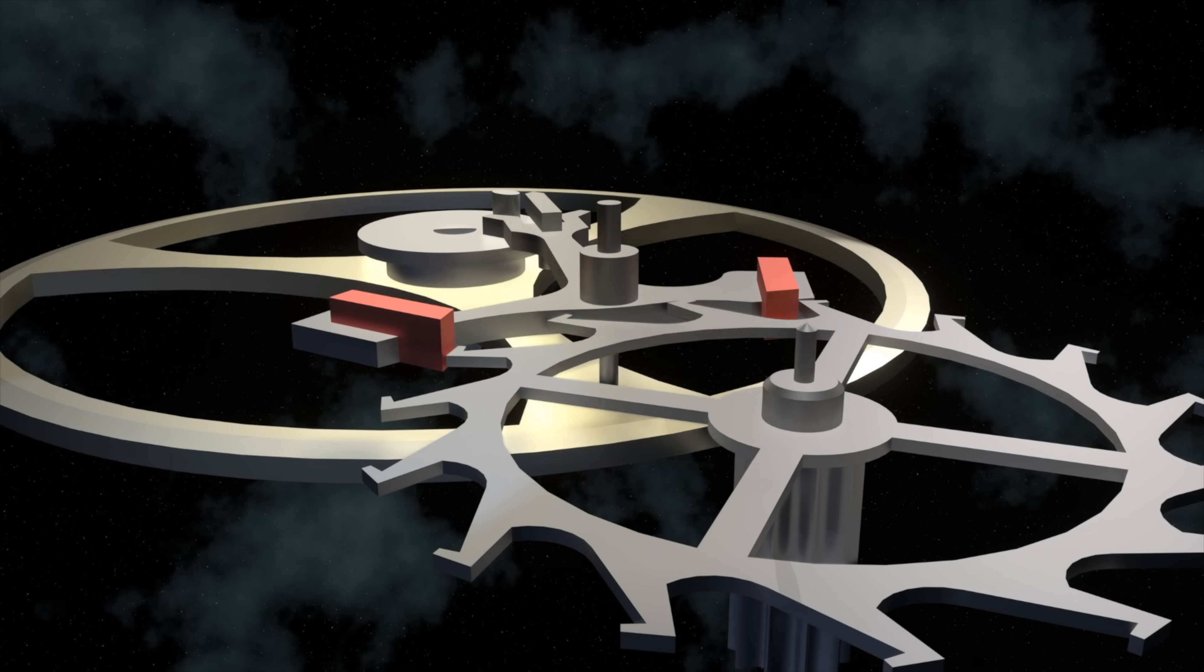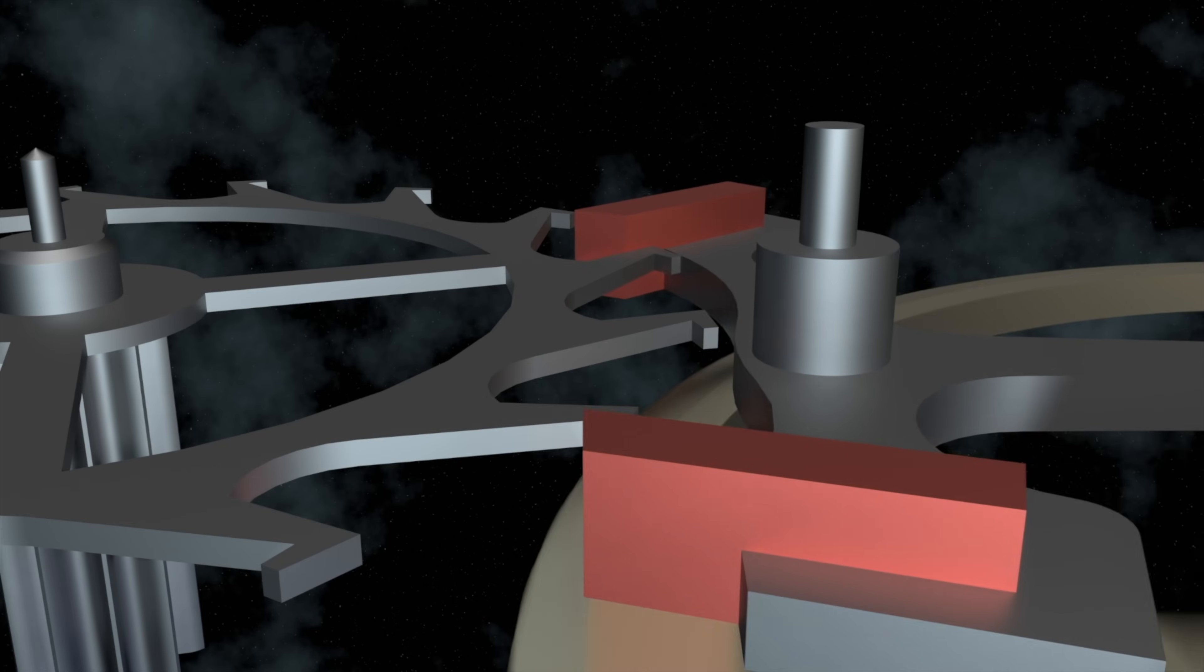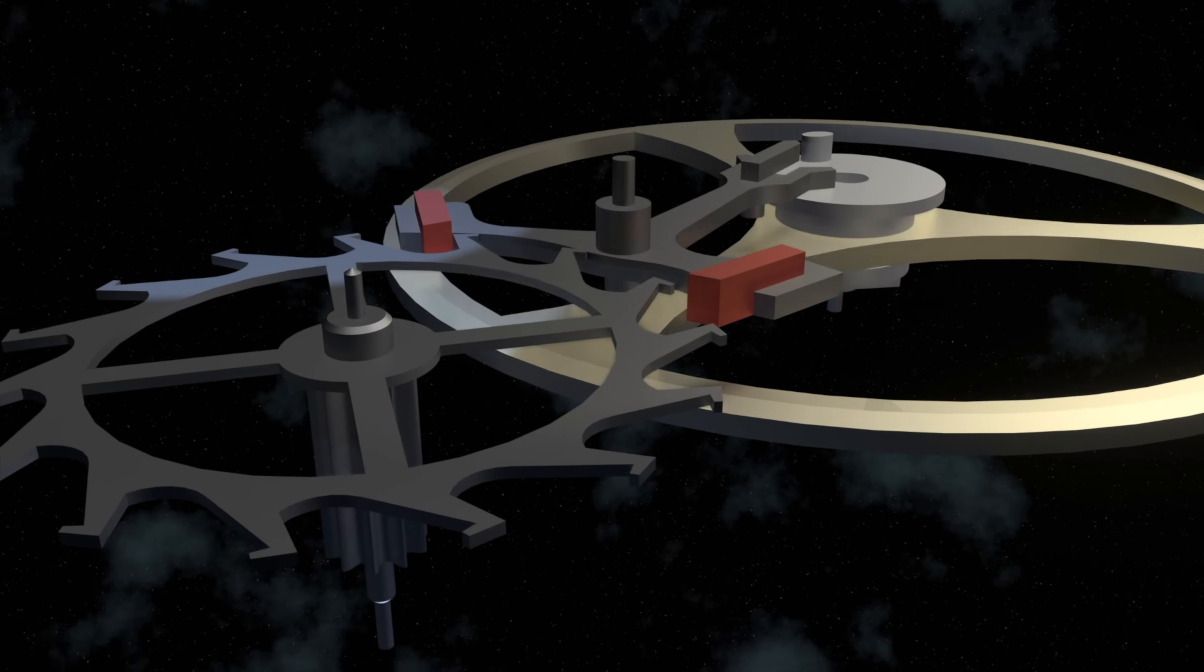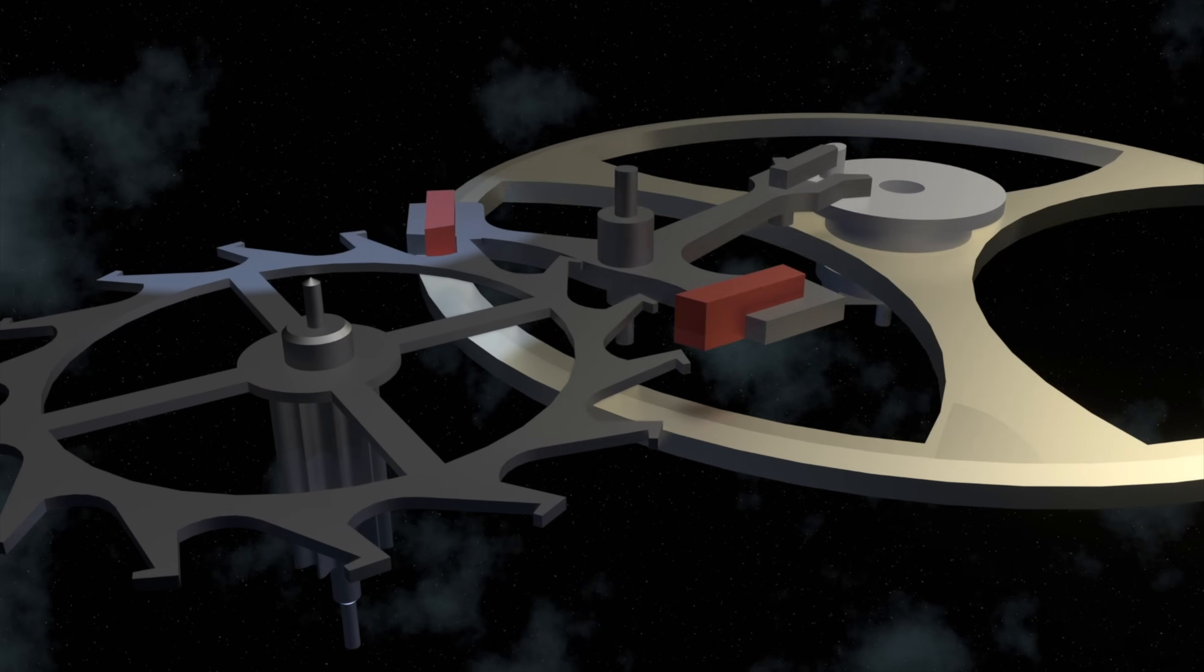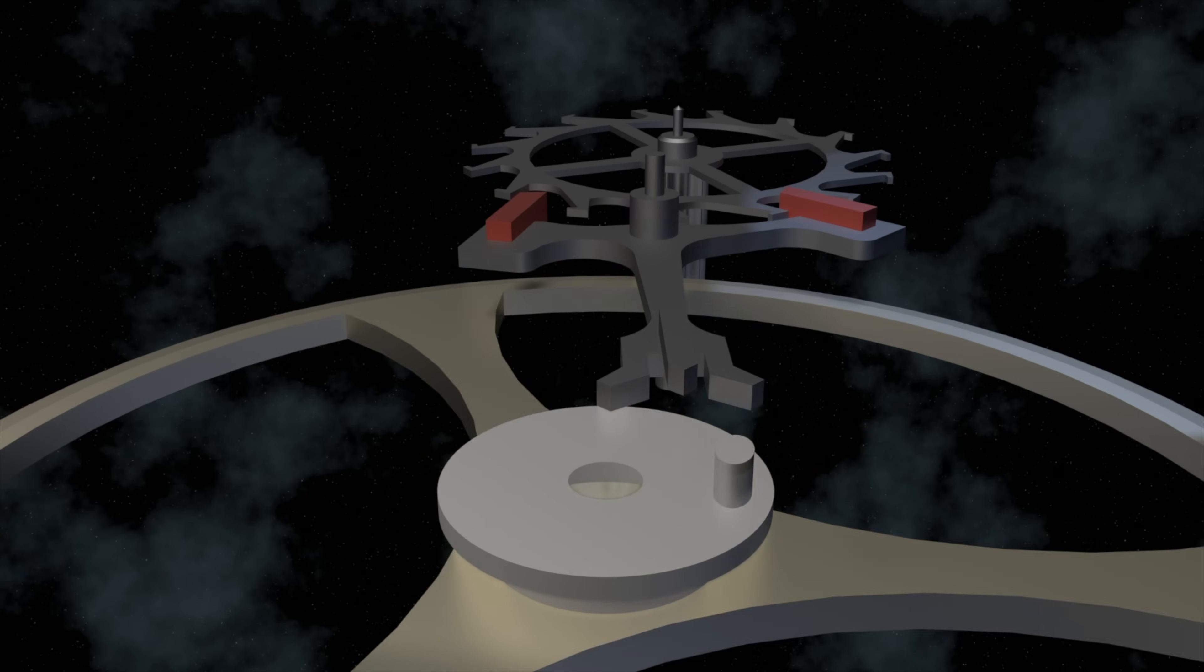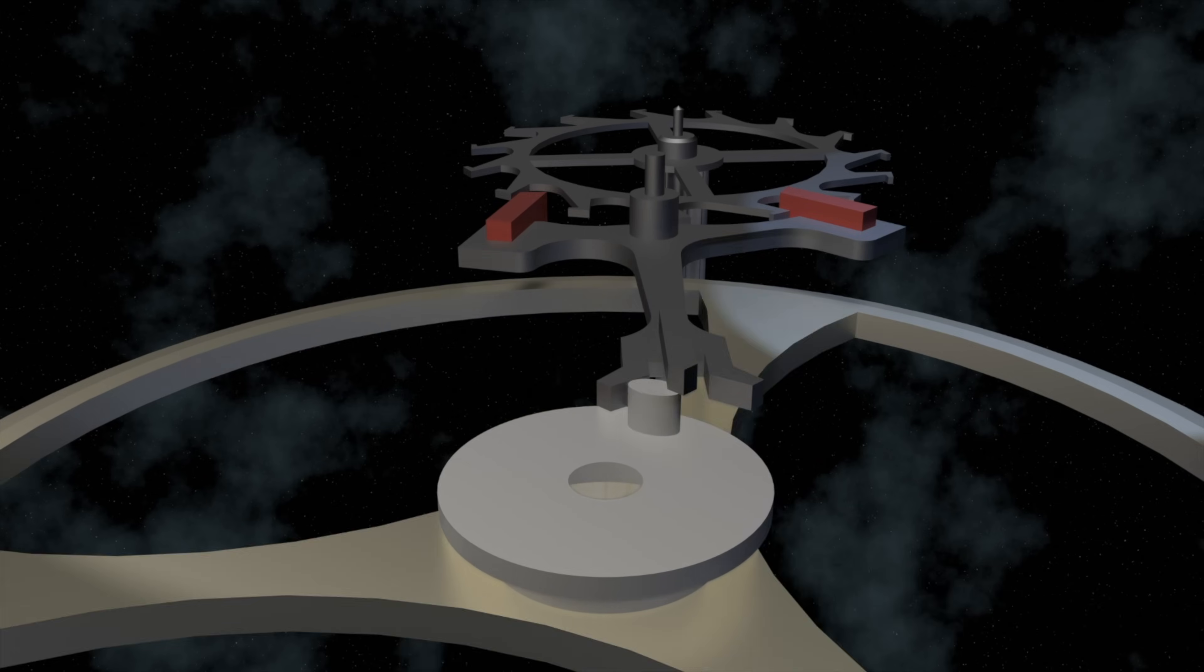Now as the balance wheel swings back, so does the impulse pin or the impulse jewel. Now as that swings back, the impulse pin then once again engages with the pallet fork, which turns it the other way. Now as the pallet fork rotates the other way, it unlocks the escape wheel ever so briefly and allows it to advance by one more step.